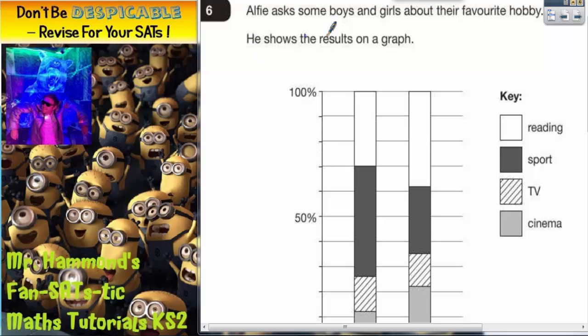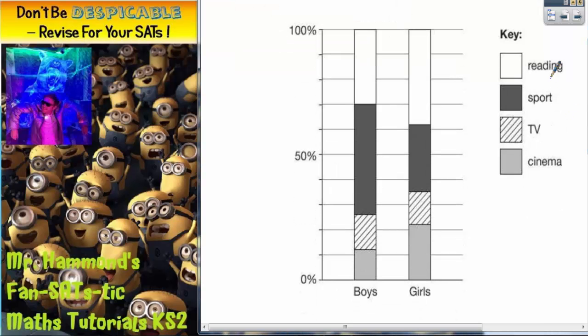Question 6. Alfie asks some boys and girls about their favorite hobby. He shows the results on a graph. There we can see the graph. We've got reading, sport, TV and cinema as the hobbies. We've got the boys bar on the left and the girls bar on the right. And we've got our percentage scale up the side.